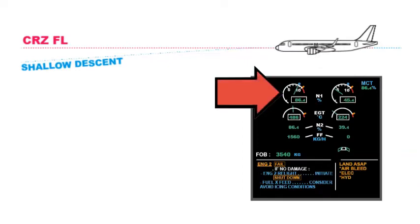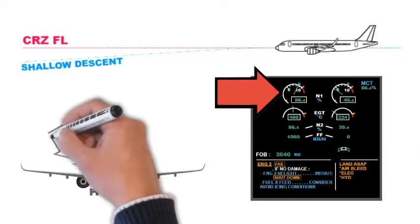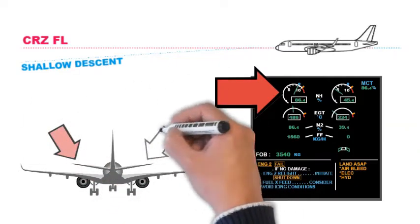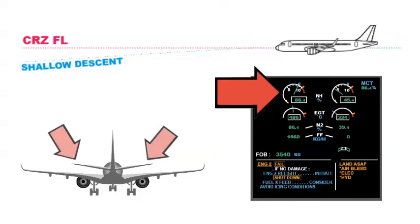With the auto-thrust disconnected, the elevator controls the target speed. The ECAM actions should not be hurried, as it is crucial to complete the drill correctly.